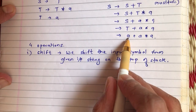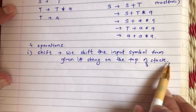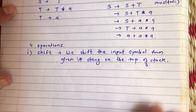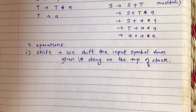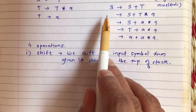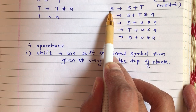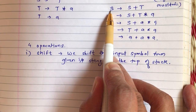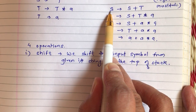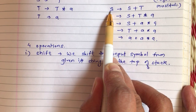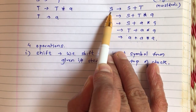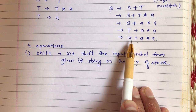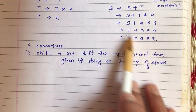Initially we perform shifts because we start from the given input string and try to reach the starting symbol of the grammar. In top-down parsing we first push the starting symbol S, but in bottom-up PDA our approach is to start from the given input string and try to reach S. So we push symbols from the input string first, and then reduce them using production rules to reach S.